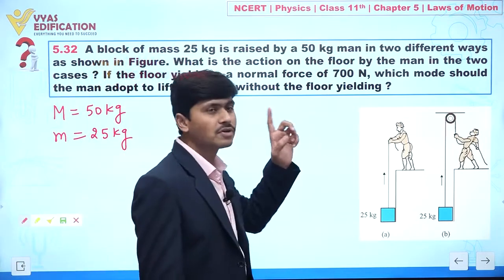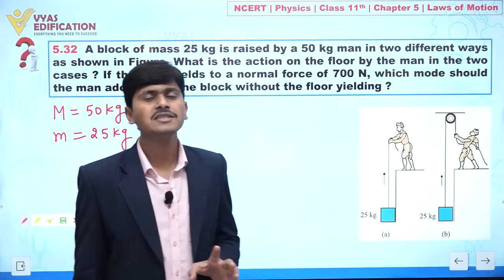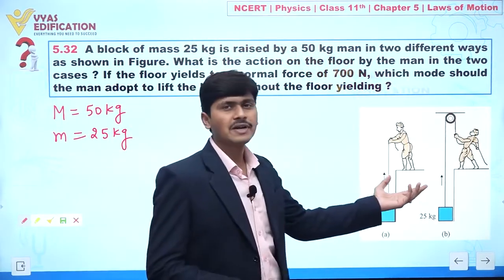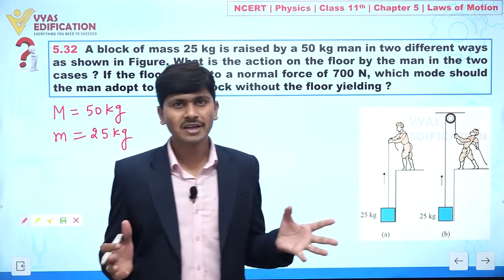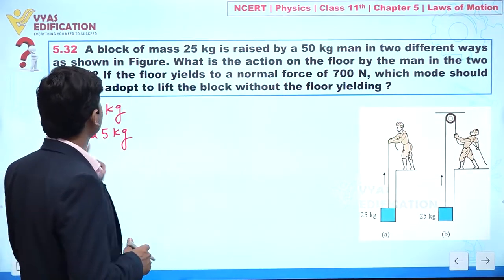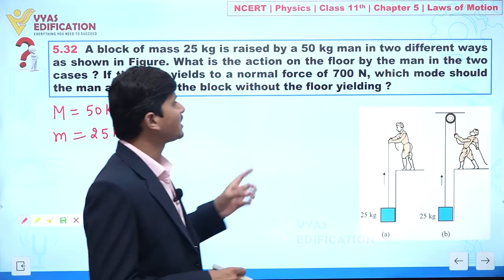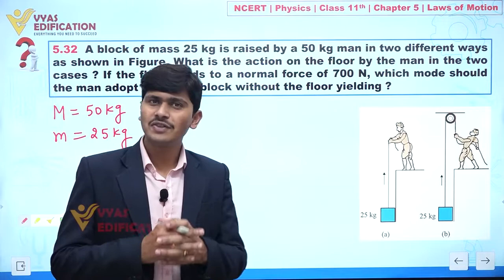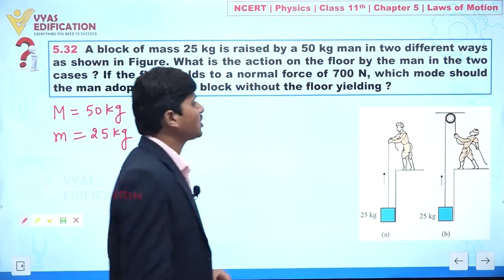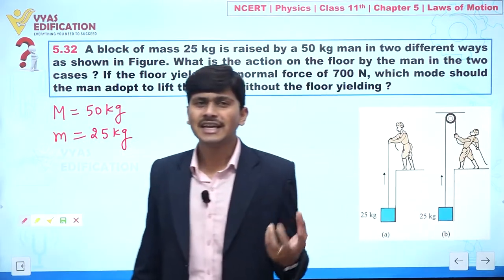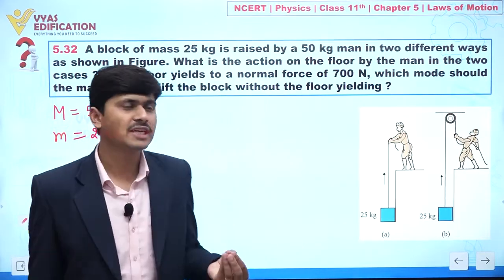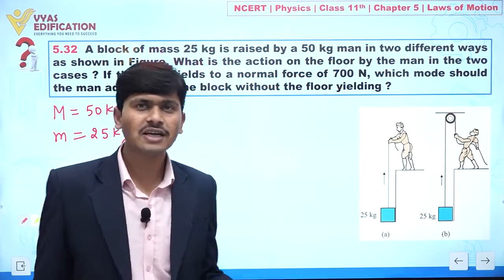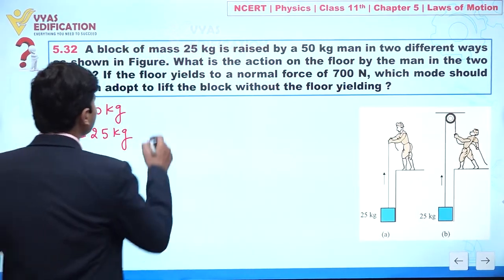What is the action on the floor by the man in two different cases? If the floor yields to a normal force of 700 N, it means if we apply more than 700 N force on this floor, the floor will collapse. We have to find which mode the man should adopt to lift the block without the floor yielding. The ultimate objective is to calculate the net reaction force exerted by the system on the floor.